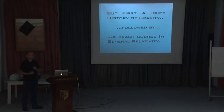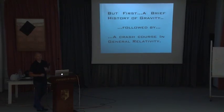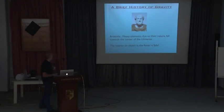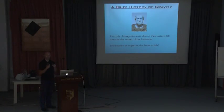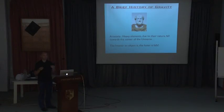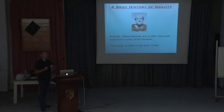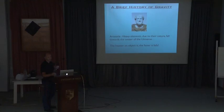To understand black holes, we need a brief history of gravity — and after that, a crash course in general relativity. We start with Aristotle, who believed objects have a nature to do things: heavy objects like rocks naturally fall toward the center of the universe, while light objects like fire and air naturally rise toward the heavens. That was the explanation for why things do what they do.